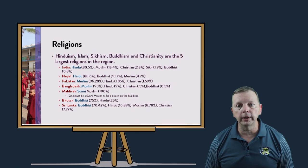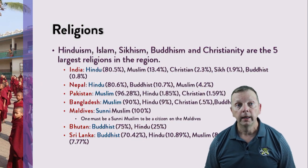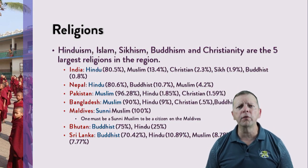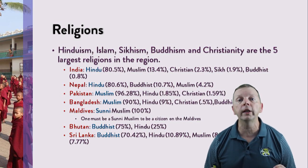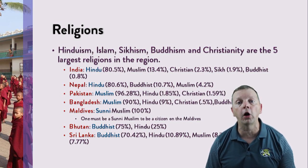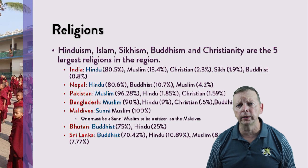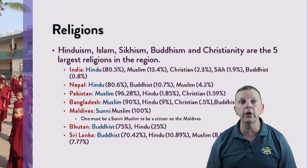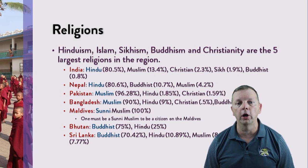Hinduism is the dominant religion in the region, with 80% of the people of India and Nepal being Hindu. Islam is the dominant religion of Pakistan and Bangladesh, with over 90% of its population being Muslim. And the island nation of the Maldives is 100% Muslim because, by law, you must be a Sunni Muslim to be able to be a citizen of the Maldives. Buddhism is the dominant religion in Bhutan and Sri Lanka — we'll talk more about that when we talk about East Asia. And a small percentage of the people in South Asia are Christian, an artifact of European colonization.